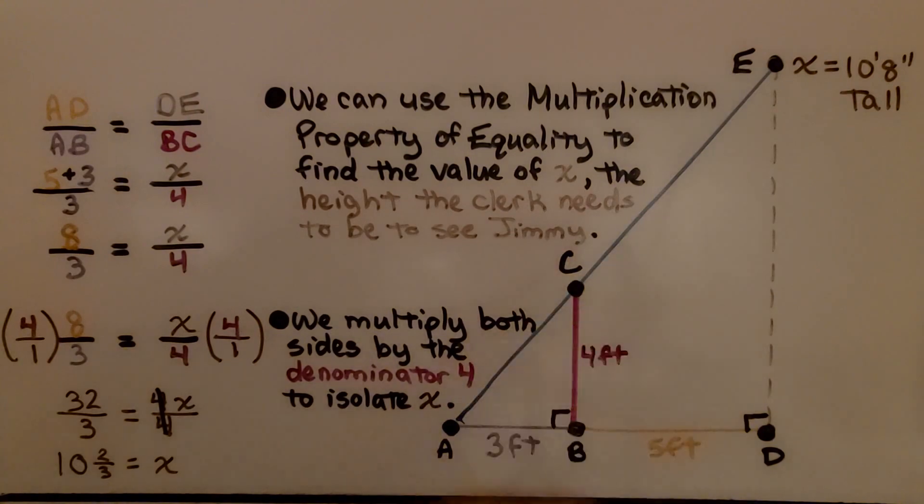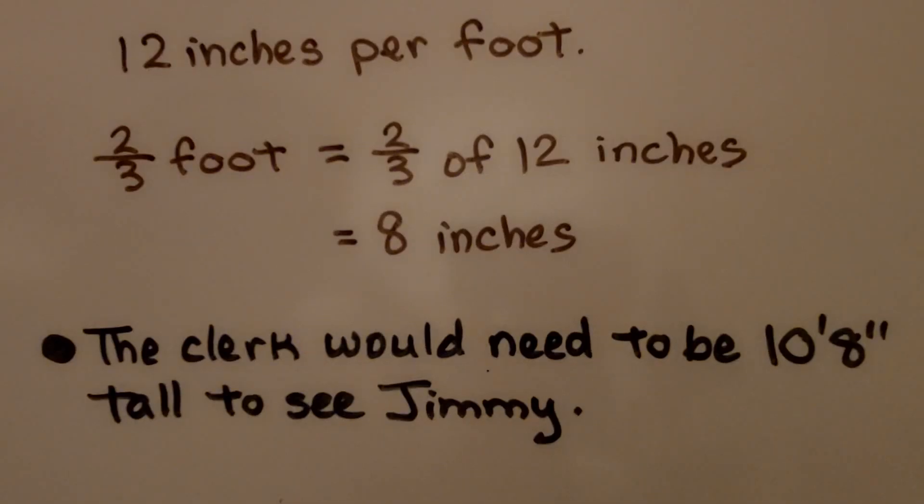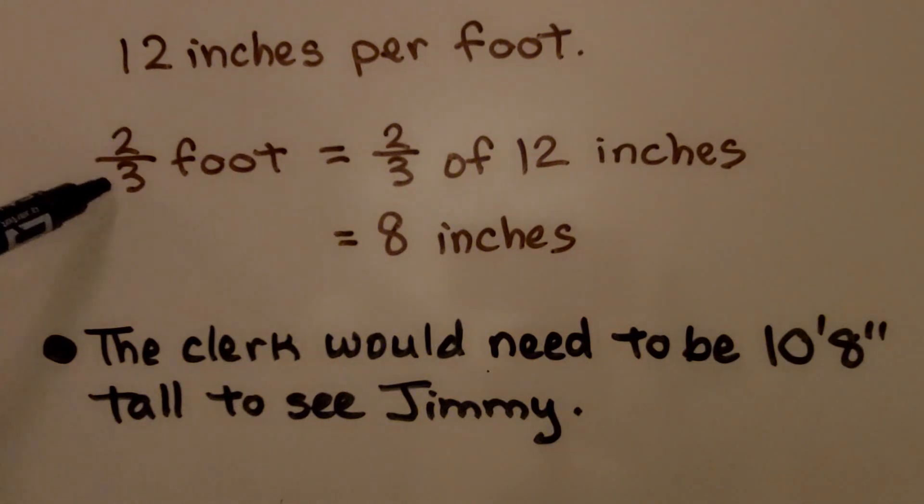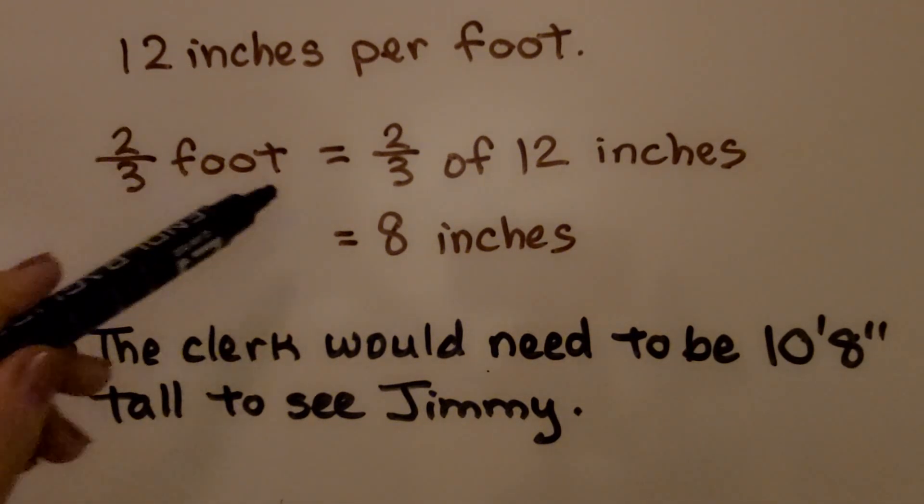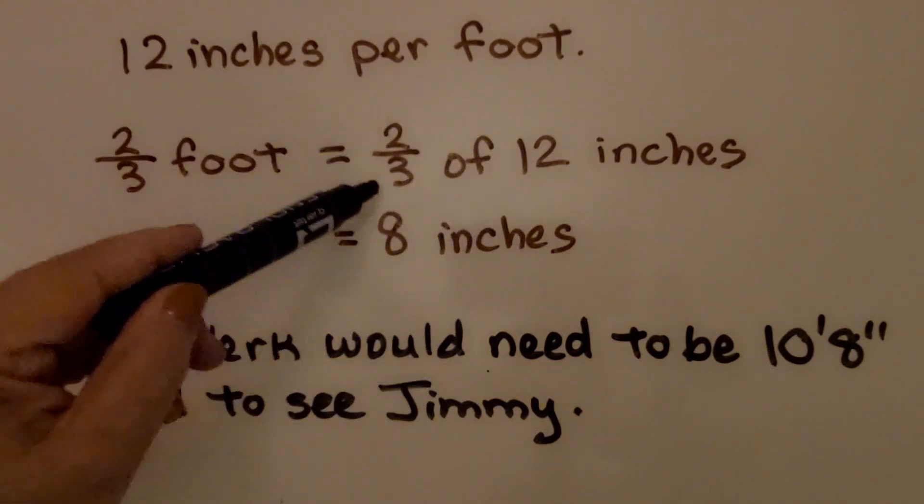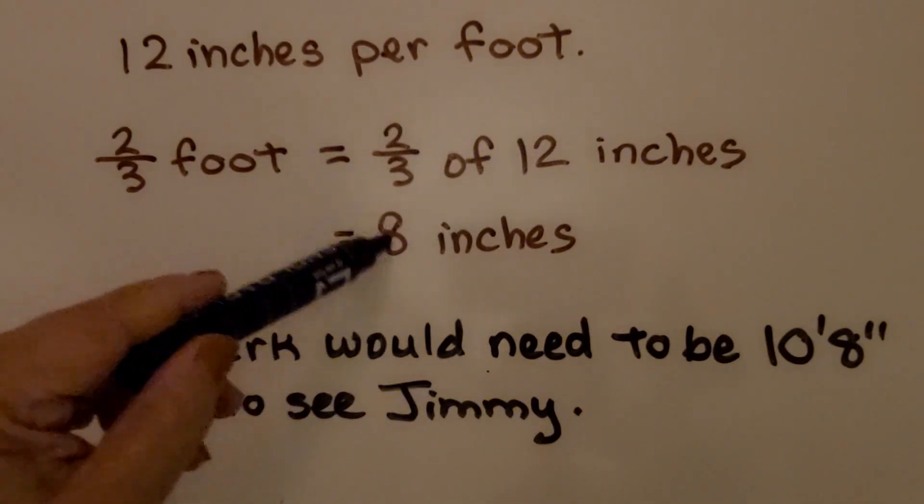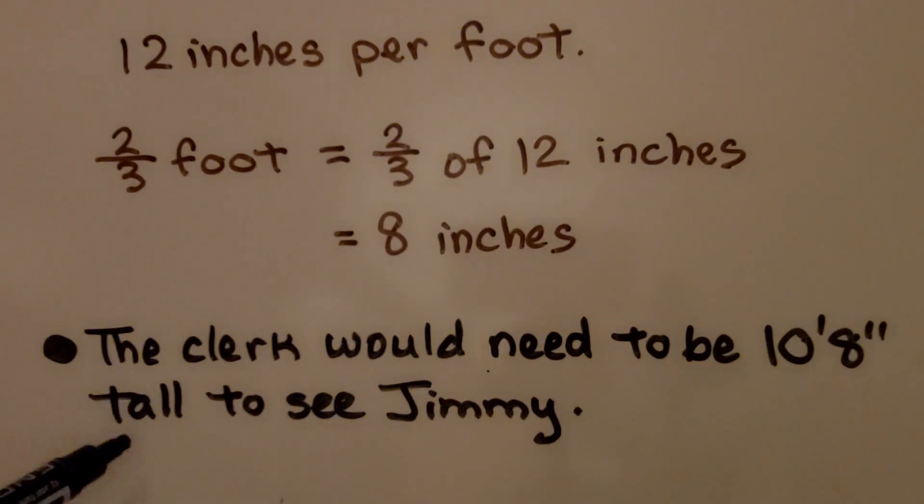There's 12 inches per foot, so we have 2 thirds foot. We had 10 and 2 thirds foot, but we're going to just deal with the 2 thirds, which means, since there's 12 inches in a foot, we have 2 thirds of 12 inches. That's 8 inches. That's how we know that the clerk would need to be 10 feet 8 inches tall to see Jimmy.